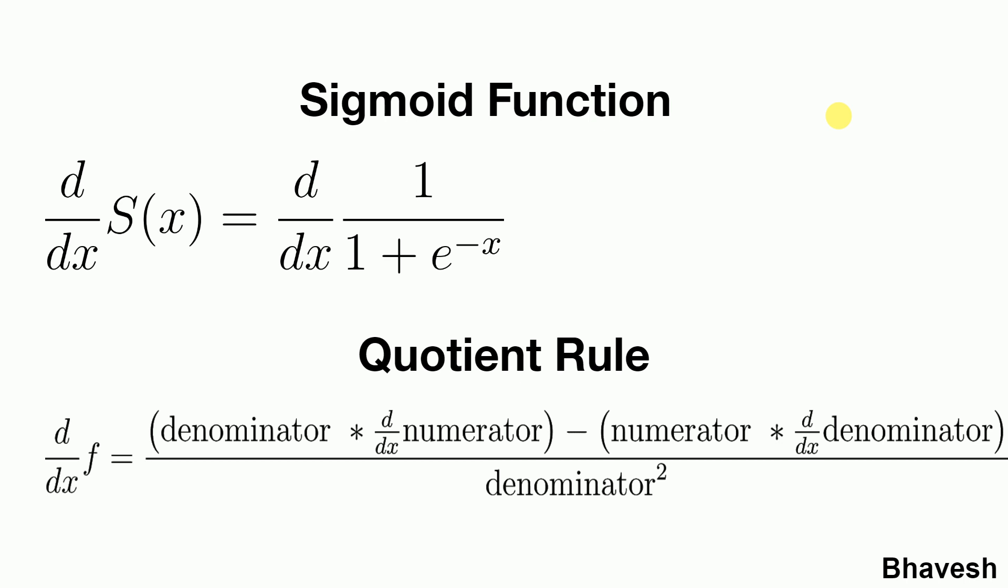As you can clearly see you have a numerator term in the sigmoid function which is 1 and you have a denominator term in the sigmoid function which is 1 plus e to the power minus x. When you try to find out the derivative of a term having a numerator and denominator we have something called as a quotient rule for our rescue.